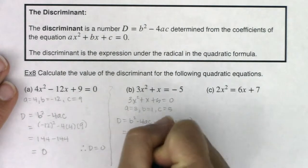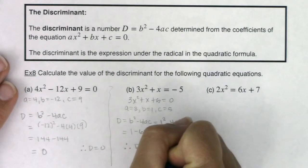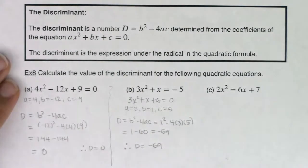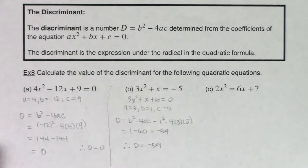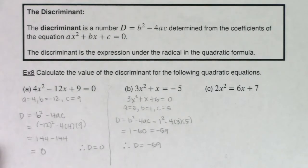So for this example I get a negative discriminant of 59. So here my discriminant was 0. Here it was negative 59. All the discriminant is, is that quantity, that expression that was under the radical in your quadratic formula, so whatever that radicand was.